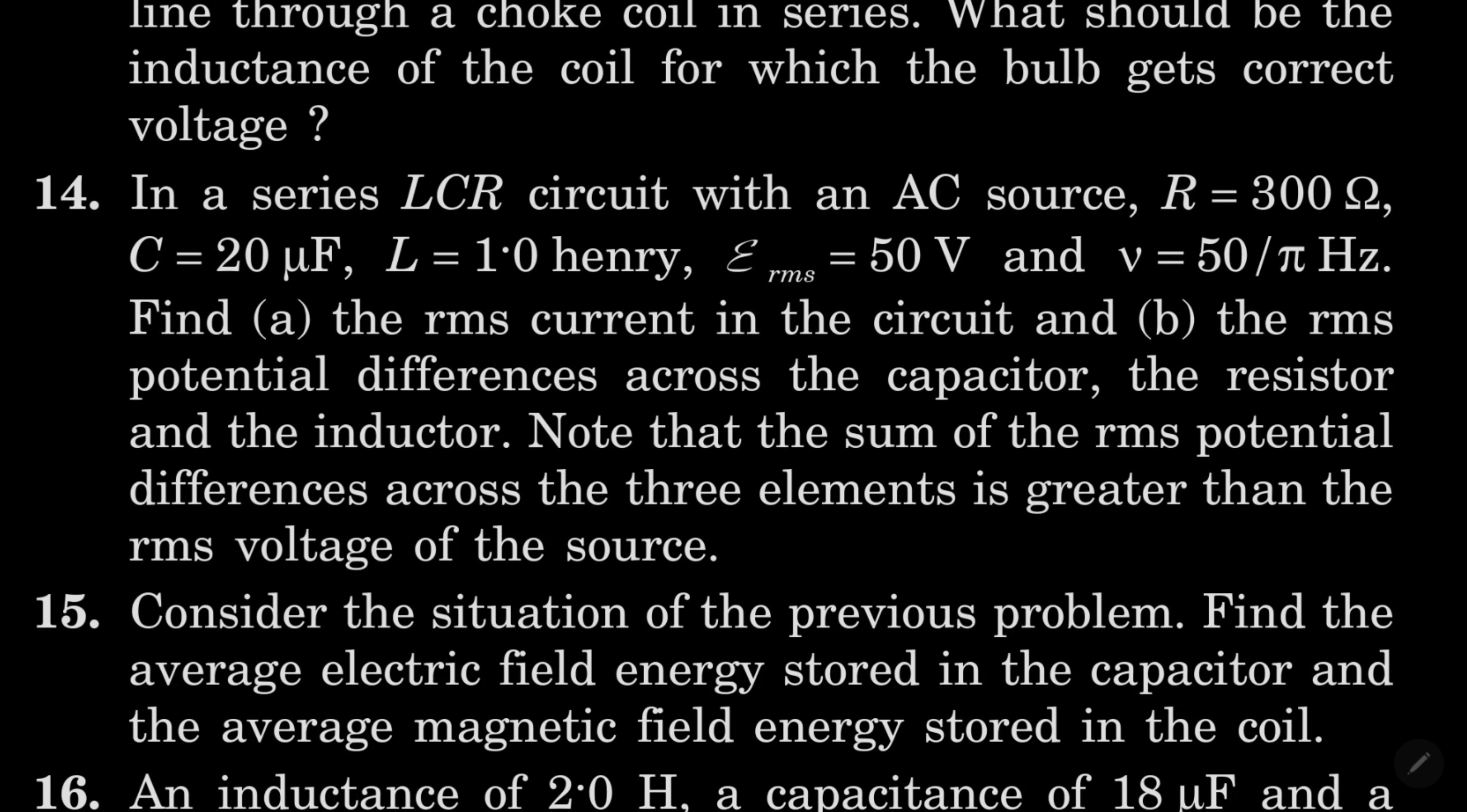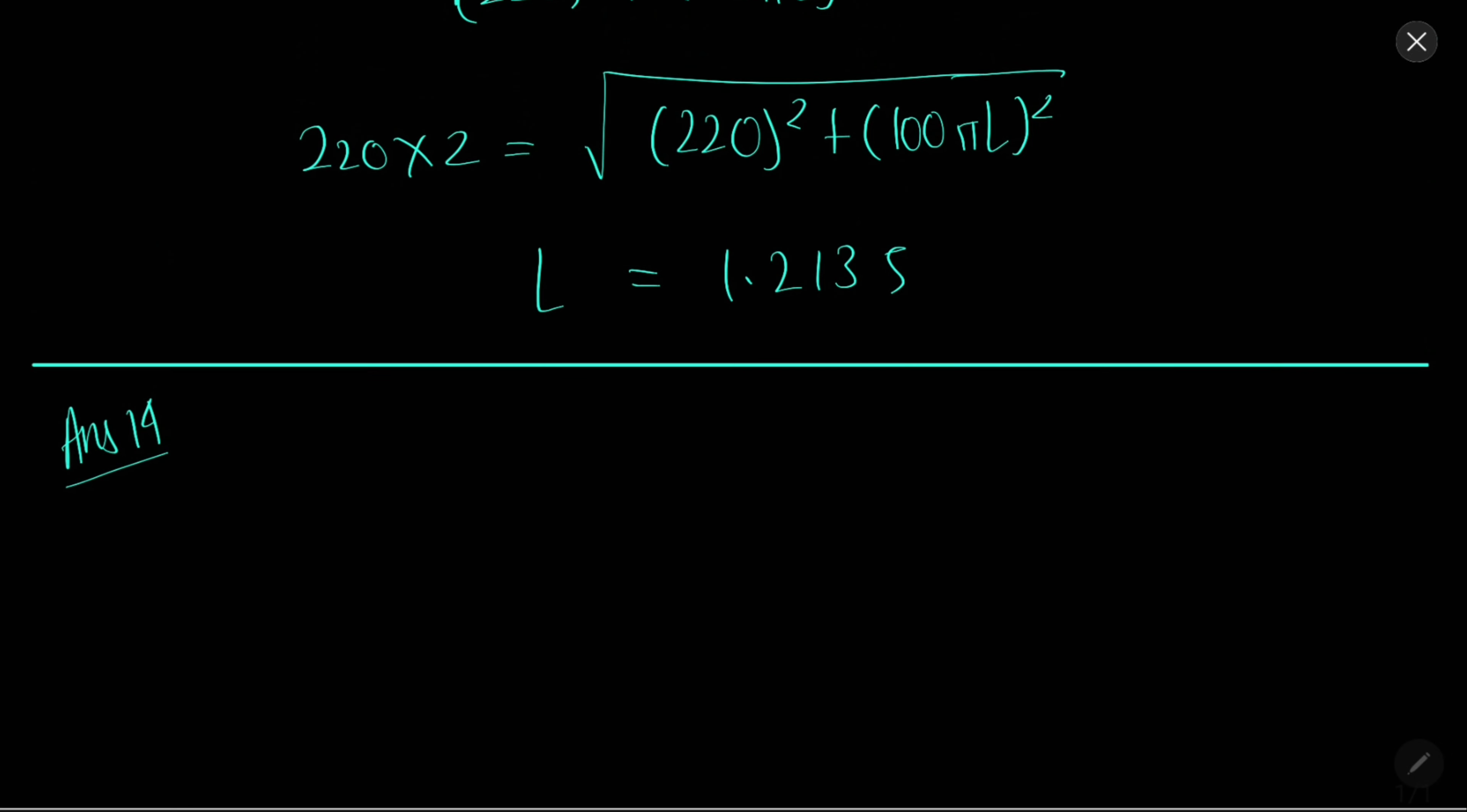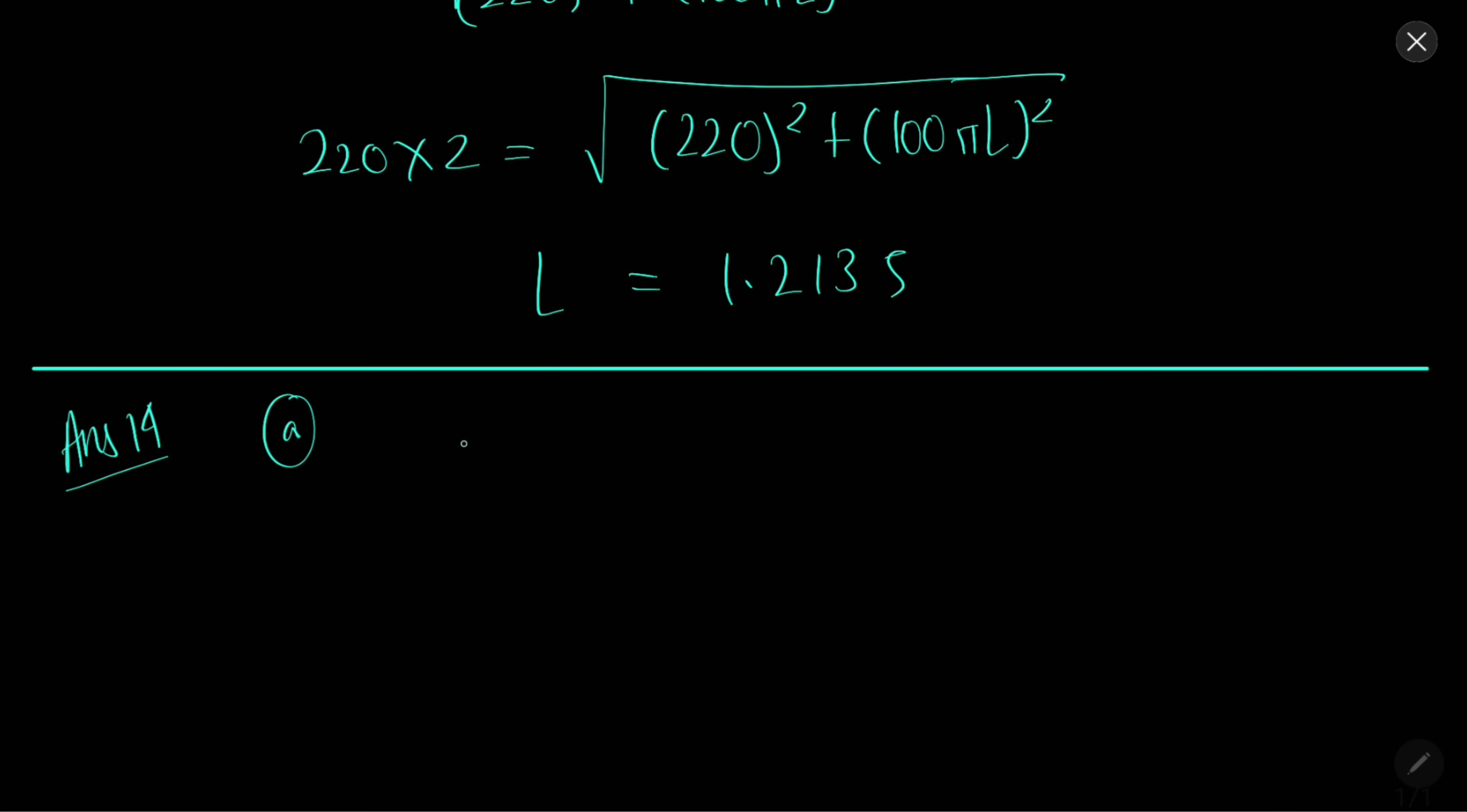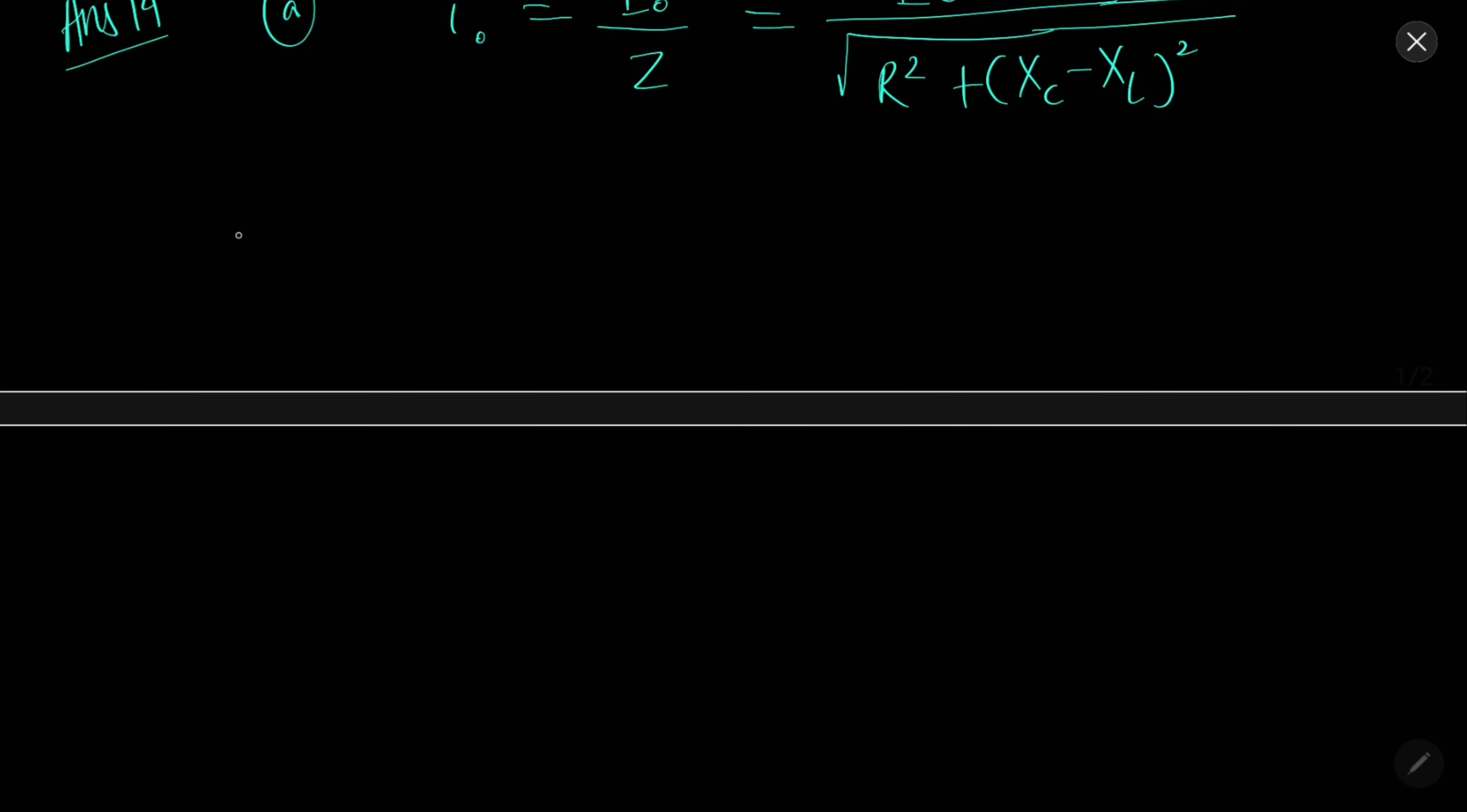In 14, find rms current and rms potential across capacitor, resistor and inductor. Solution 14 part A: I₀ will be peak current, E₀ by Z, and it is E₀ by root r square plus X_C minus X_L whole square. Ultimately when we put all the values we will find that I₀ will come 0.1 ampere.